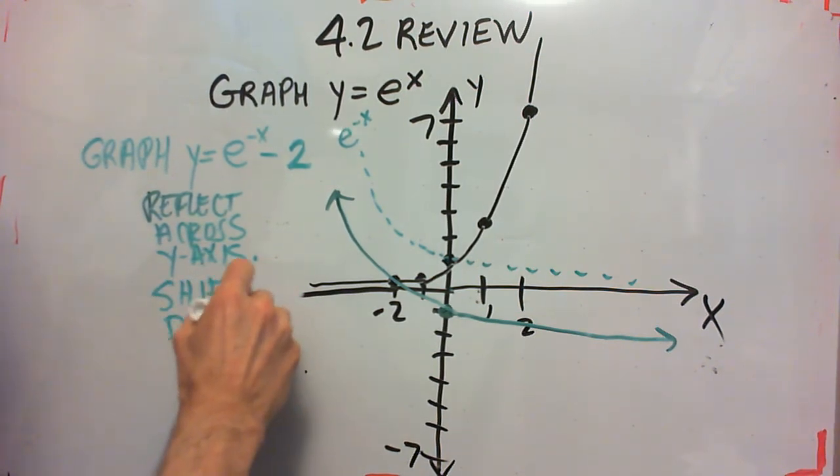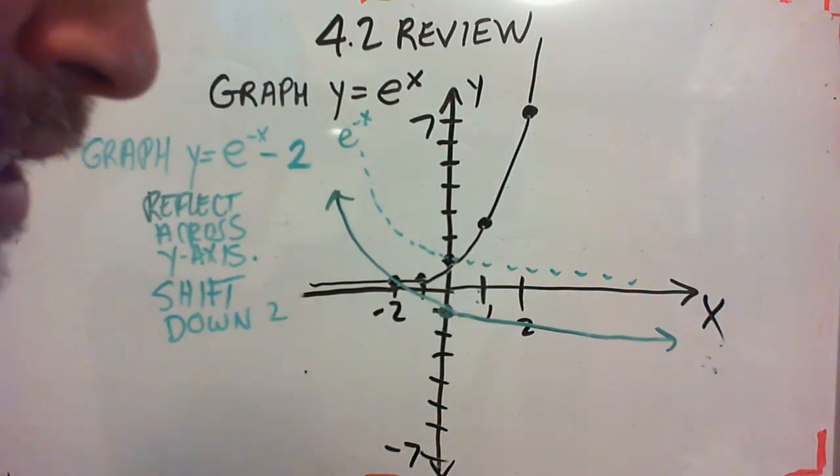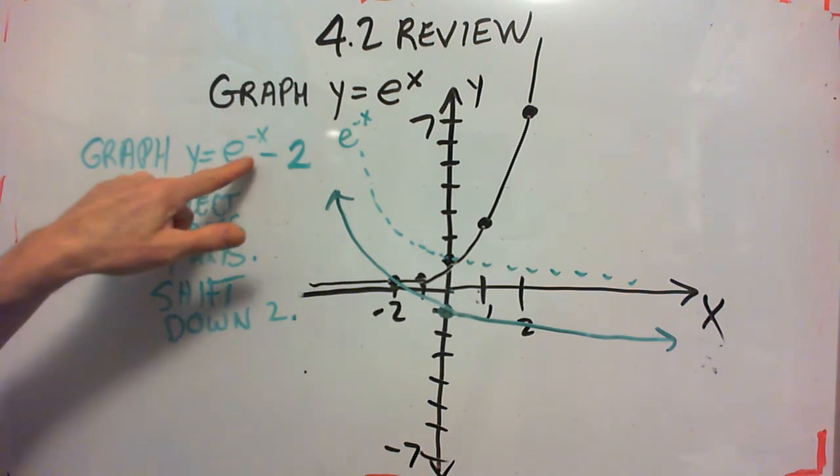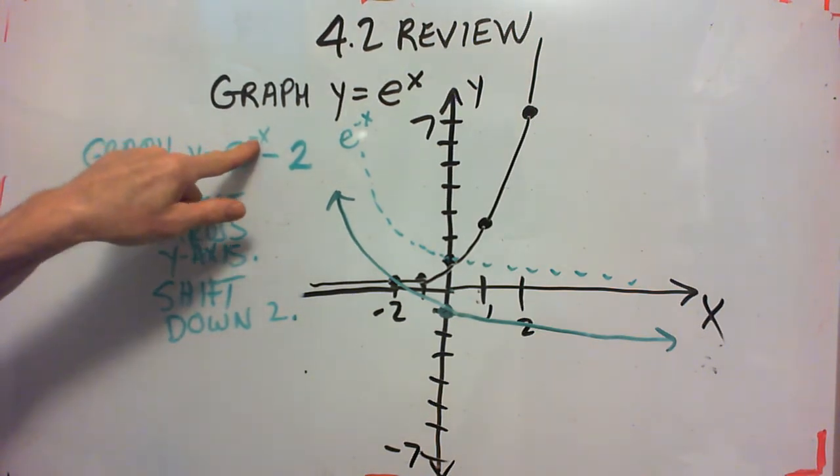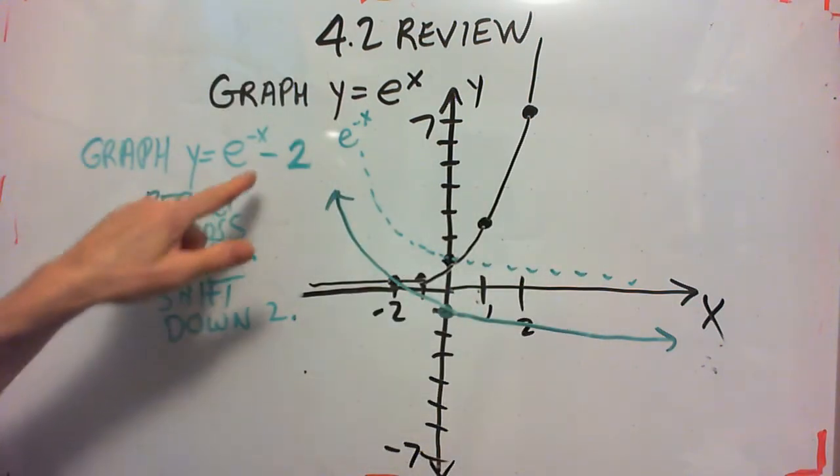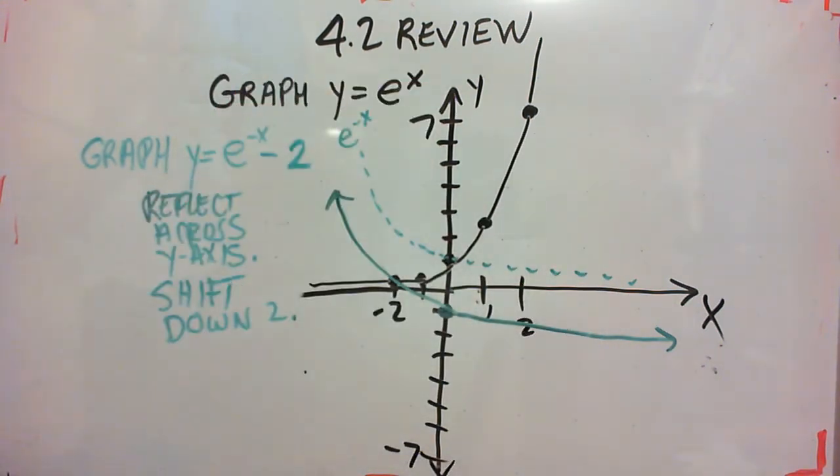So there was a homework problem, number 2, that says what do you have to do to the e to the x function to get this other function. We're using those shift rules. Replacing x with negative x shifts across the y axis. Subtracting 2 moves it all down 2.